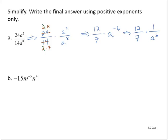Now I can write this as a single fraction. 12 times 1 is 12, and 7 times a to the sixth is 7a to the sixth.